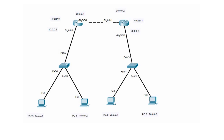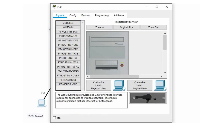In the practical example, there are four end devices, each connected to a switch which in turn is connected to a router. No IP configurations have been done yet, so we'll configure IP addresses on the end devices first. PC0 is connected to a switch connected to router R0. The gateway IP of PC0 is 10.0.0.3, which is the gigabit 0/0/0 interface of router R0.